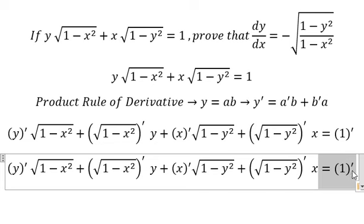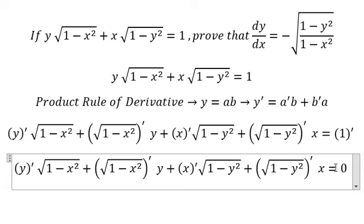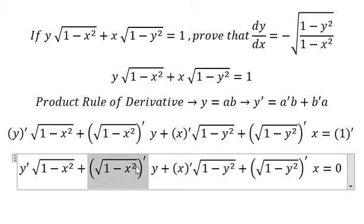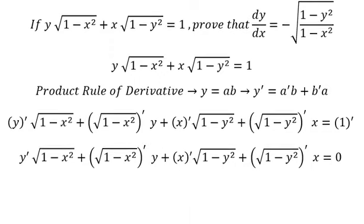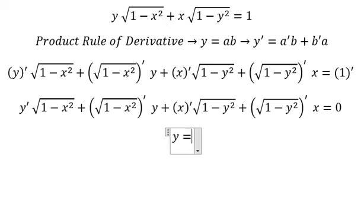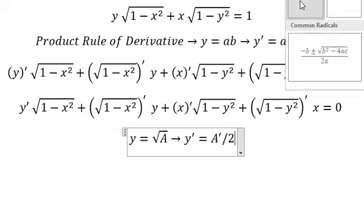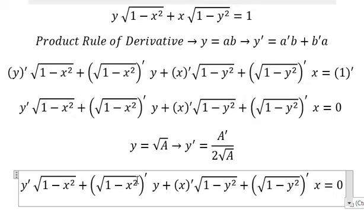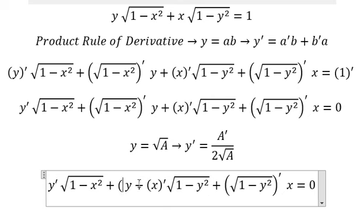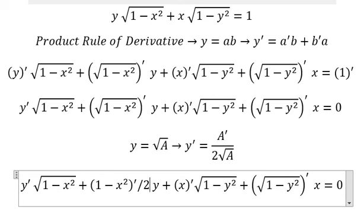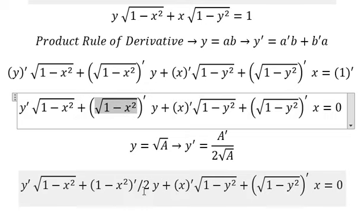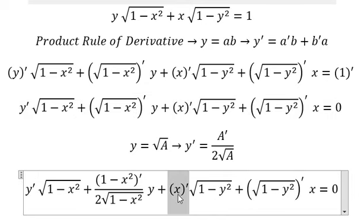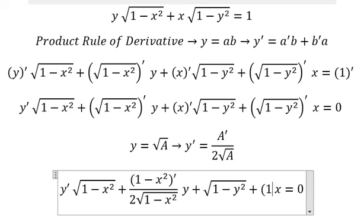This one is about the constant, so you get number zero. This one we have the derivative of y — we need to apply the formula in here. So if we apply the formula, we need to do the derivative of one minus x squared over number two with the square root of one minus x squared. This one is about number one, and this one is about one minus y squared.